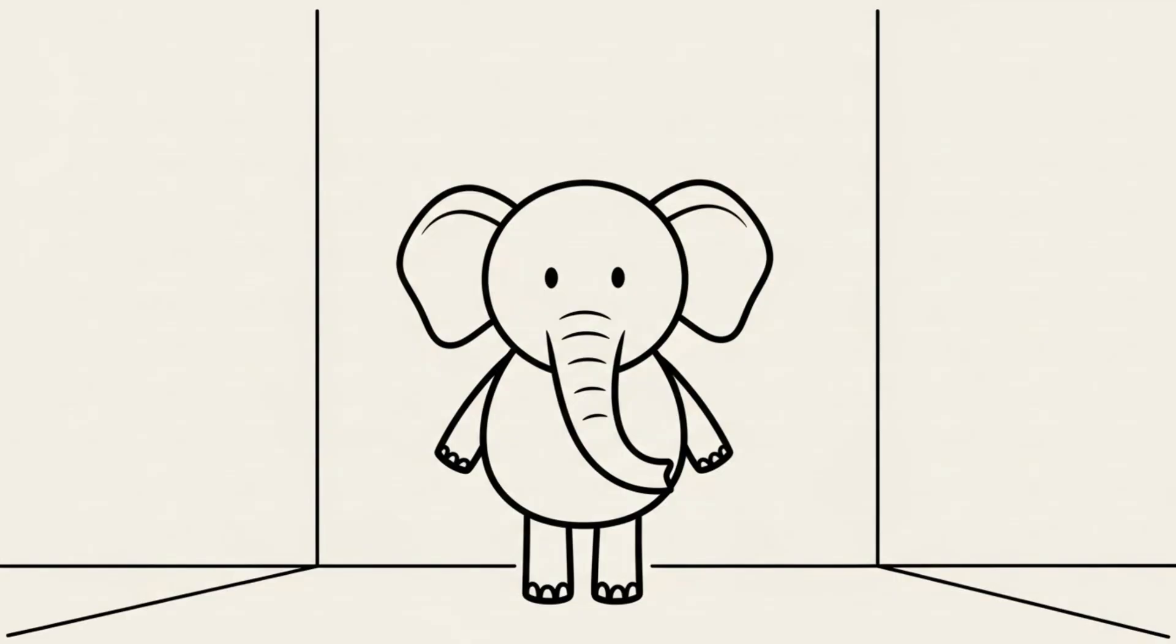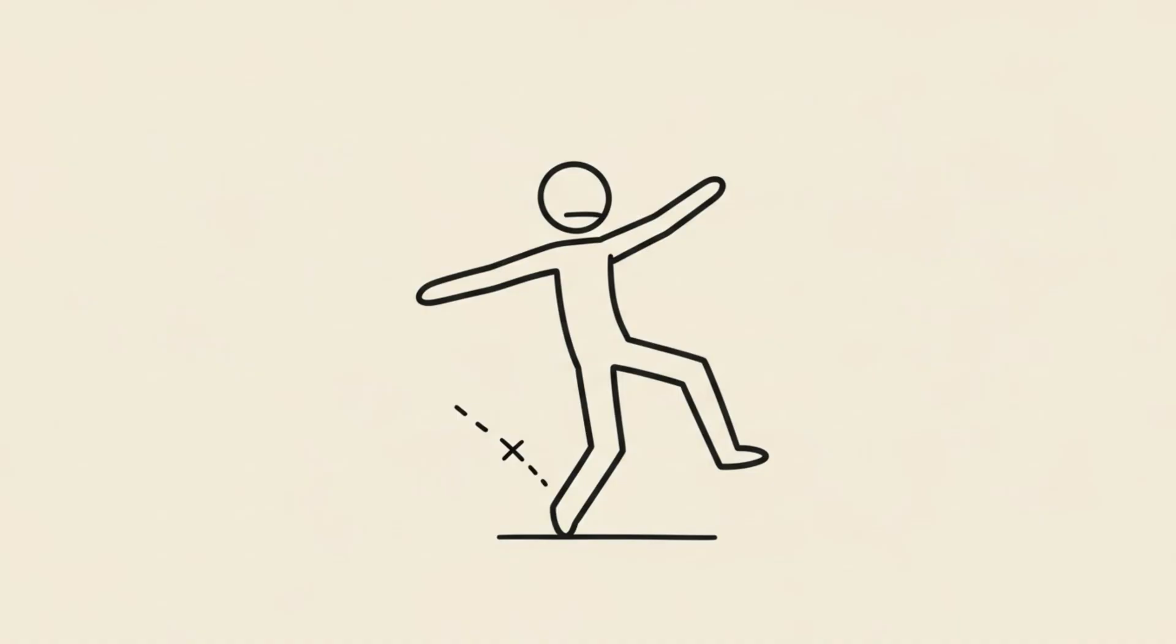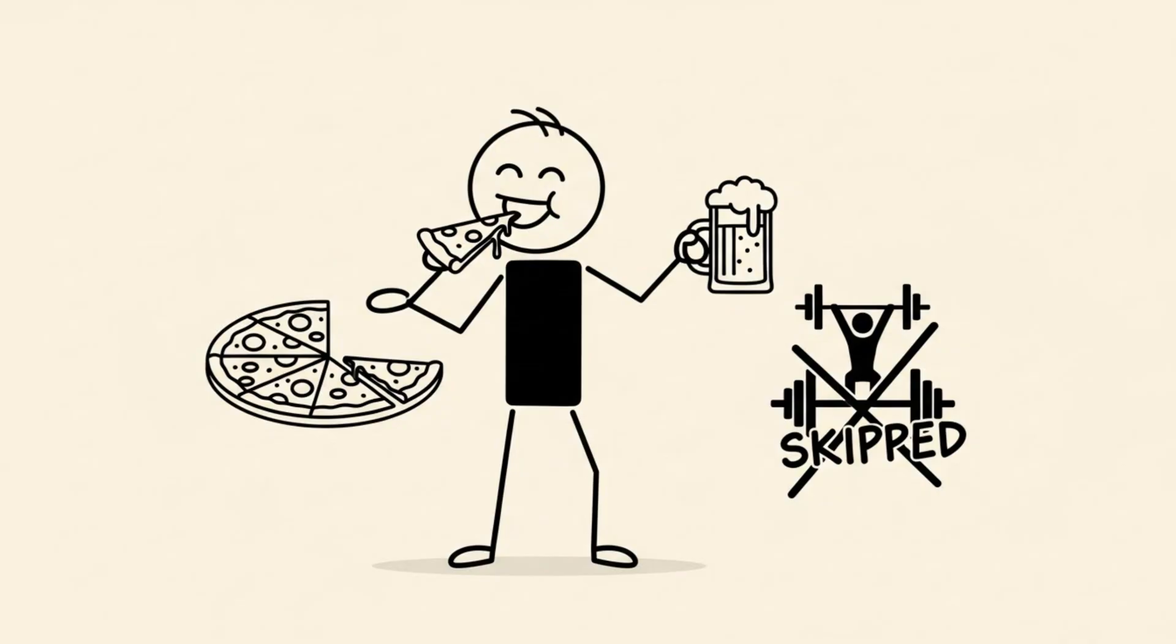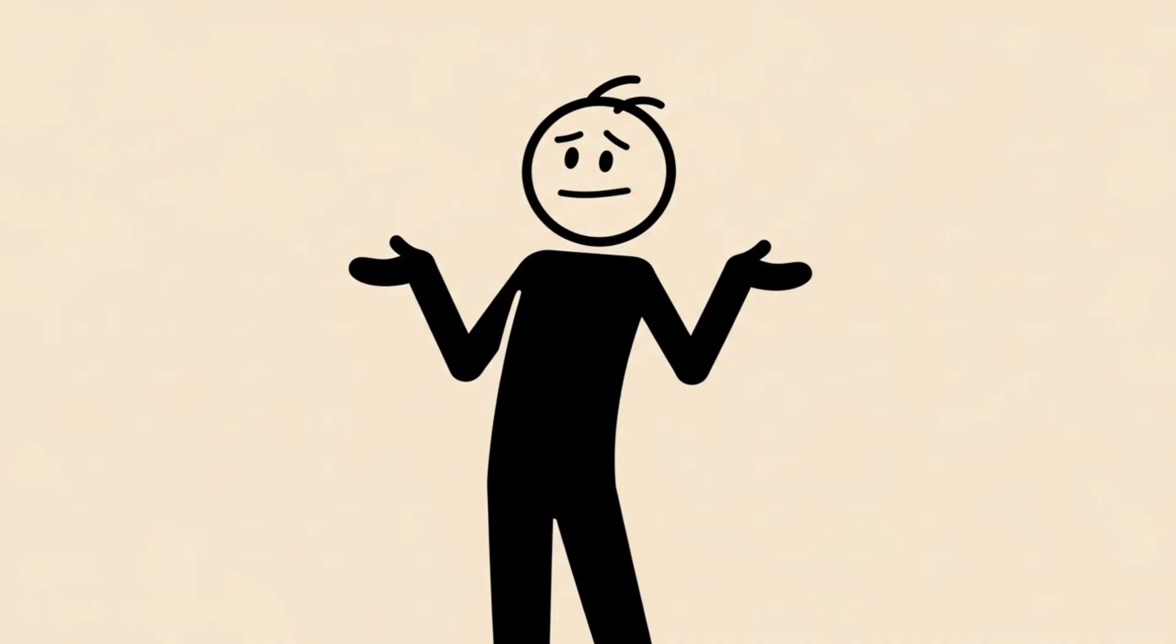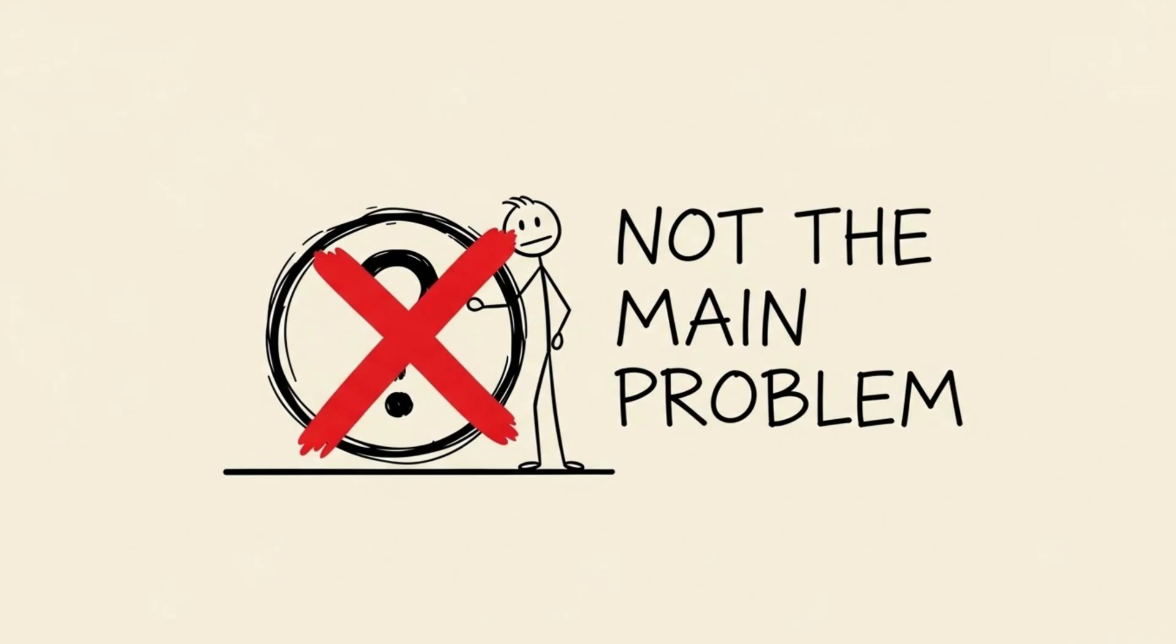Now let's address the elephant in the room. Failure. You are going to mess up. You are going to have a day where you eat the pizza, drink the beer, and skip the gym. That is called being a human being.